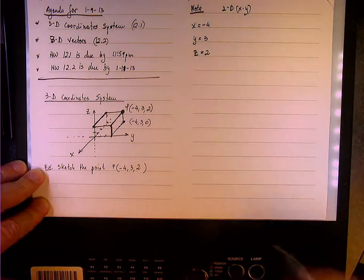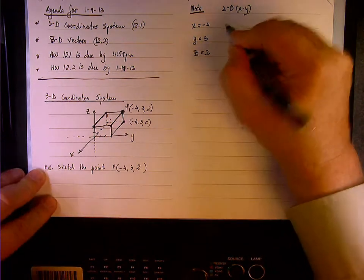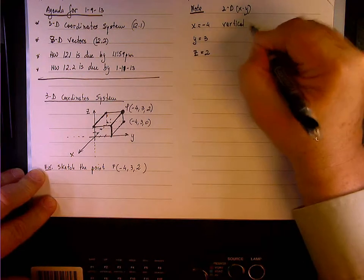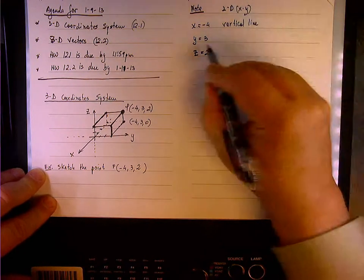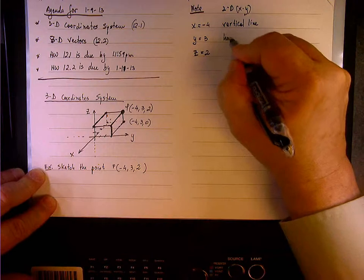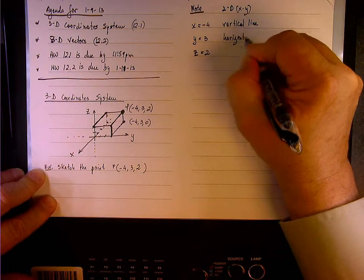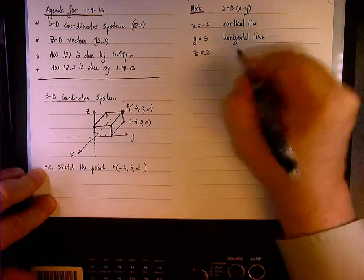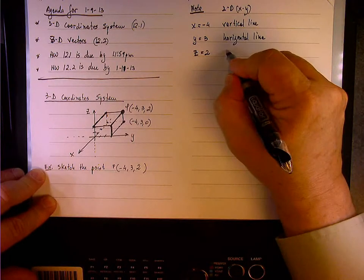then x equals negative 4 is a vertical line. Y equals 3 is a horizontal line. And on the xy plane, z equals 2 does not exist.